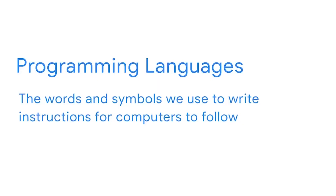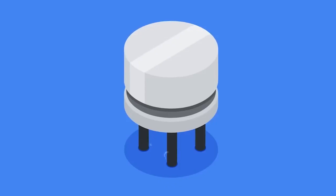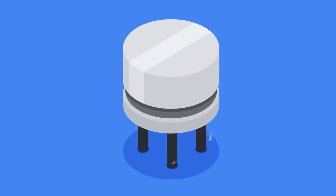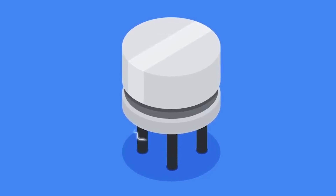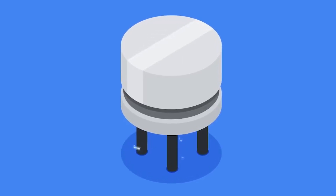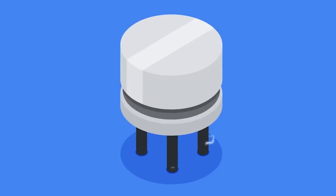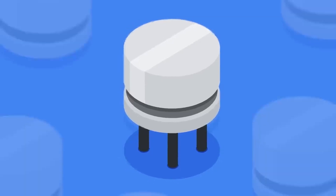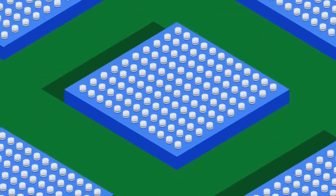Programming languages originated with the development of electronic computers. They were, and still are, the words and symbols that we use to write instructions for computers to follow. Communicating with a computer ultimately relies on computer hardware. A transistor is the most fundamental component of the computer because it controls the flow of electricity through a circuit. A transistor can exist in two states, on or off, like a switch.